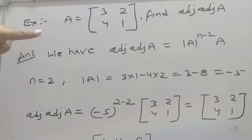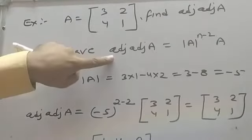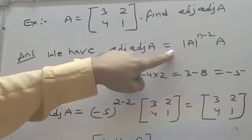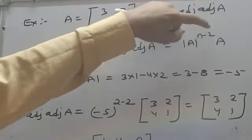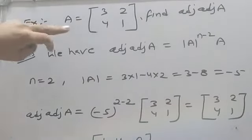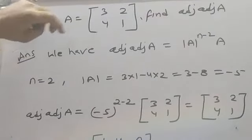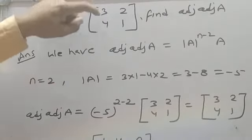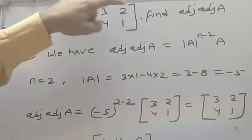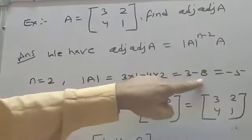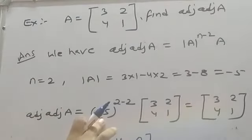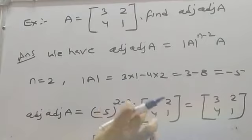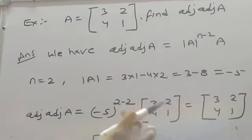Example 3 is based on property 4: Adjoint of Adjoint A equals determinant A raised to power n minus 2 into A. Here n is 2, and determinant A equals 3 into 1 minus 4 into 2, which gives 3 minus 8 equal to minus 5. So Adjoint of Adjoint A equals minus 5 raised to power 2 minus 2 into A.